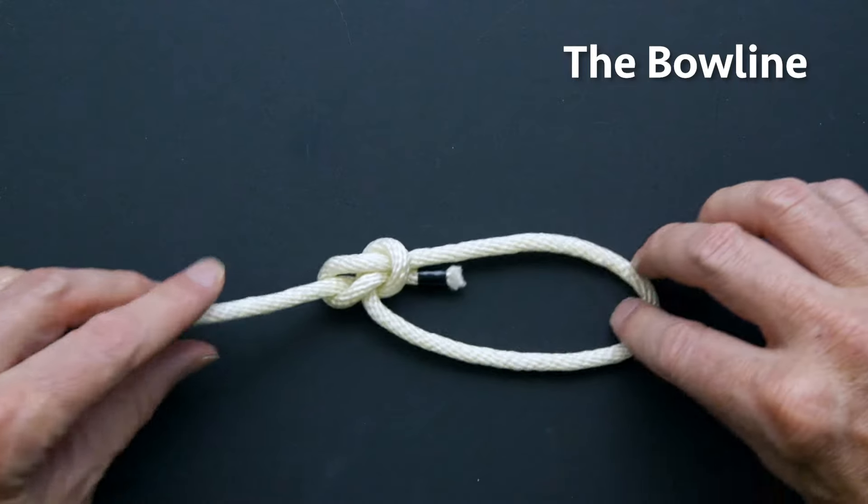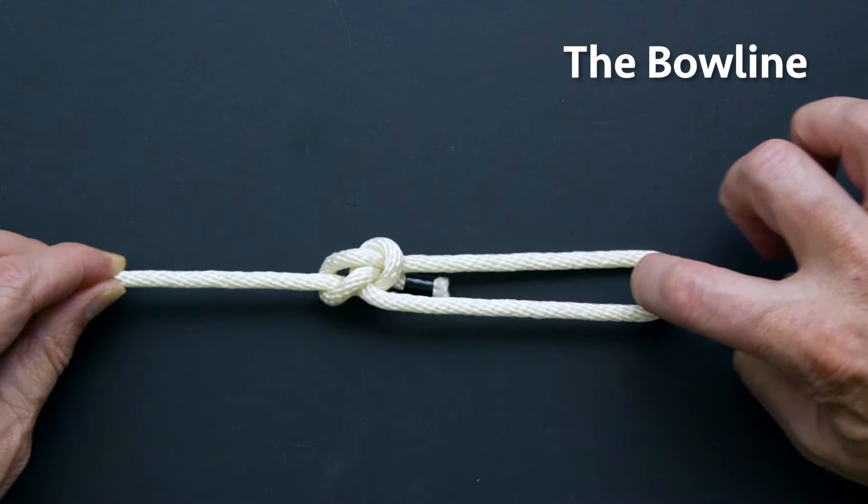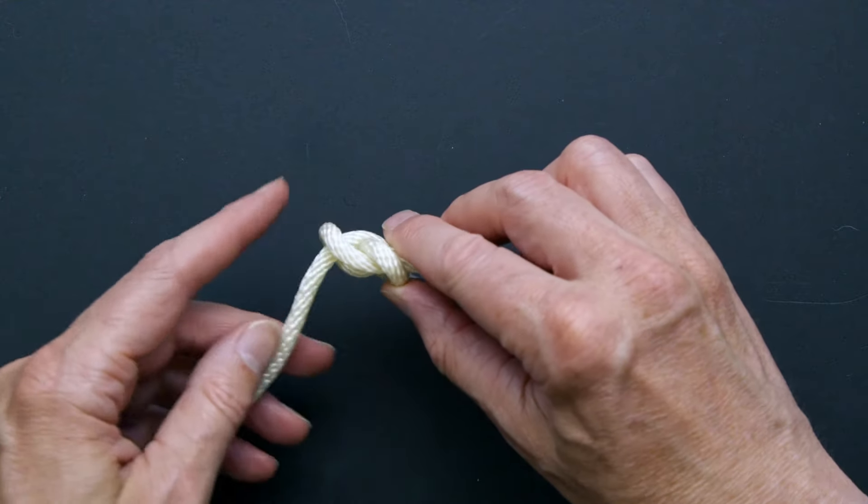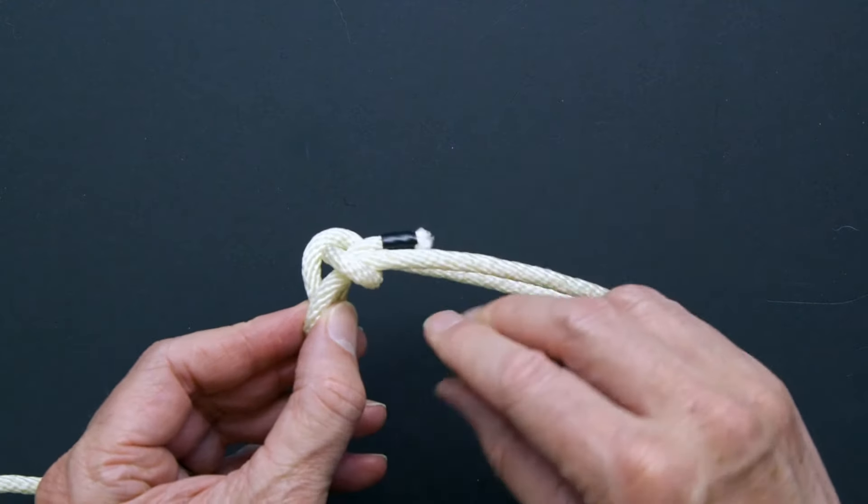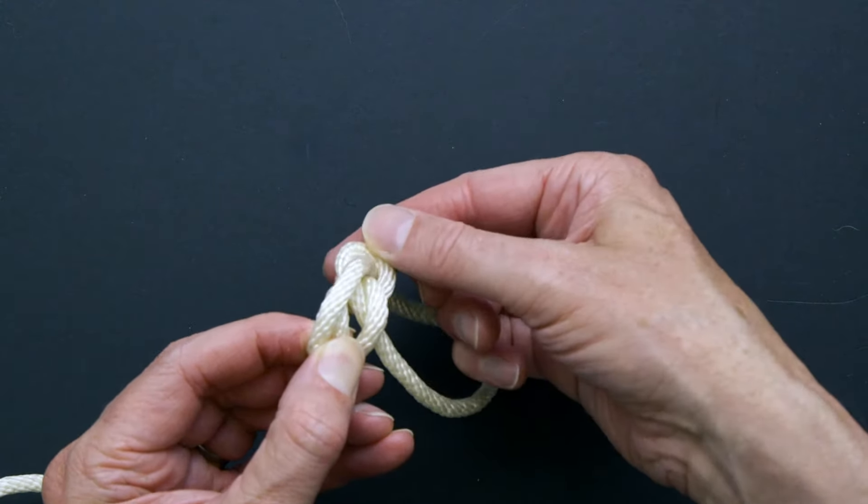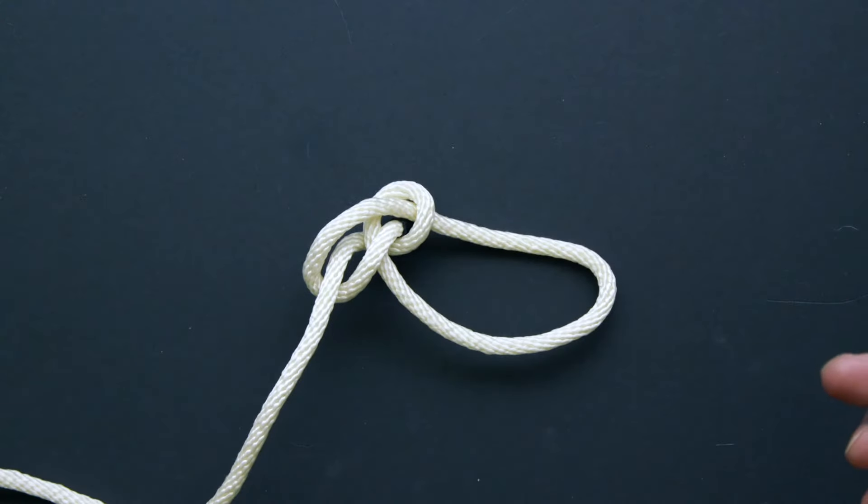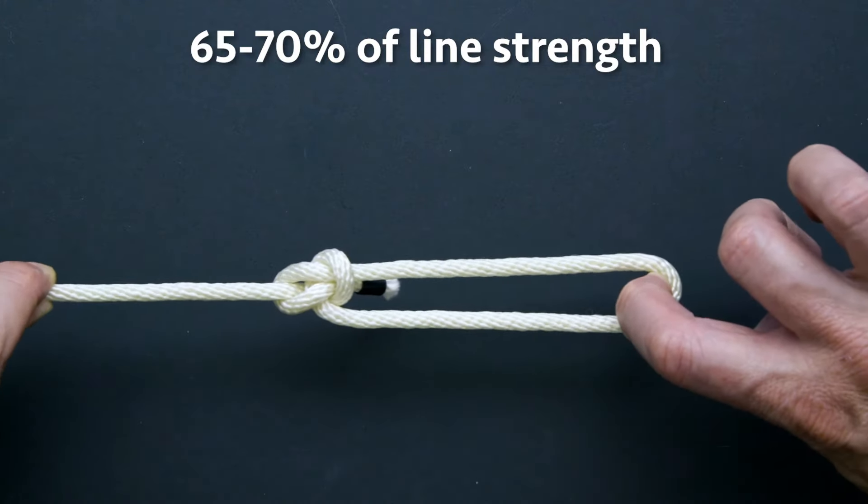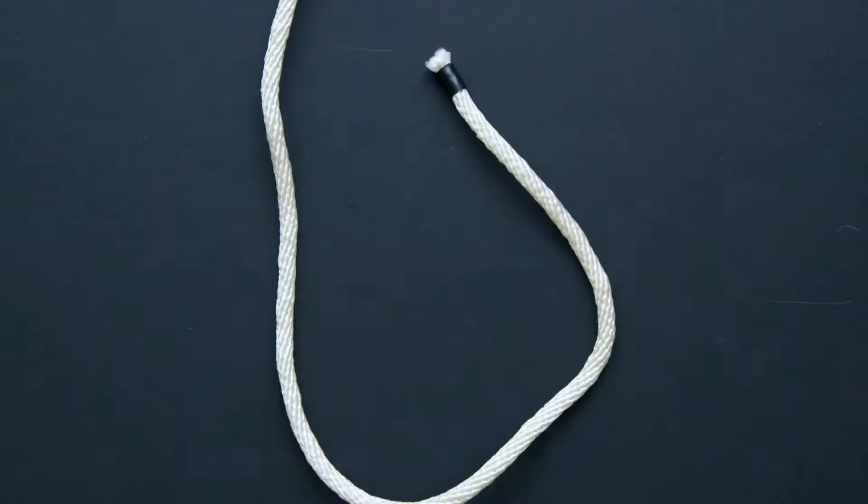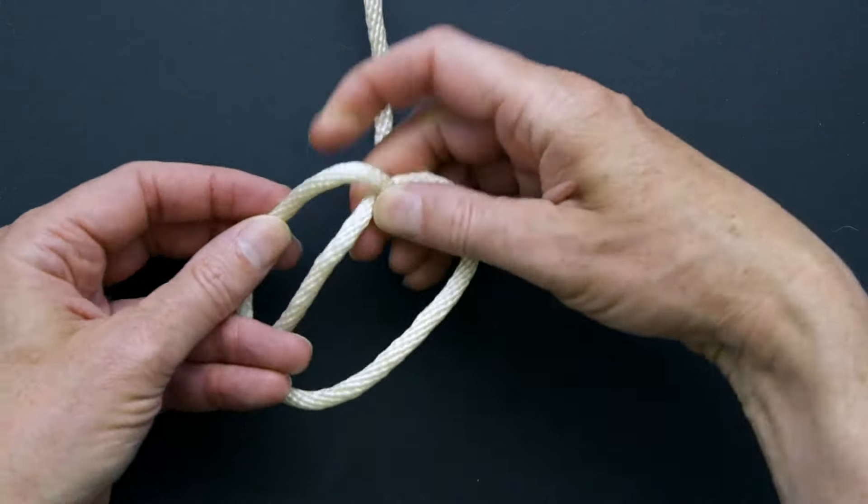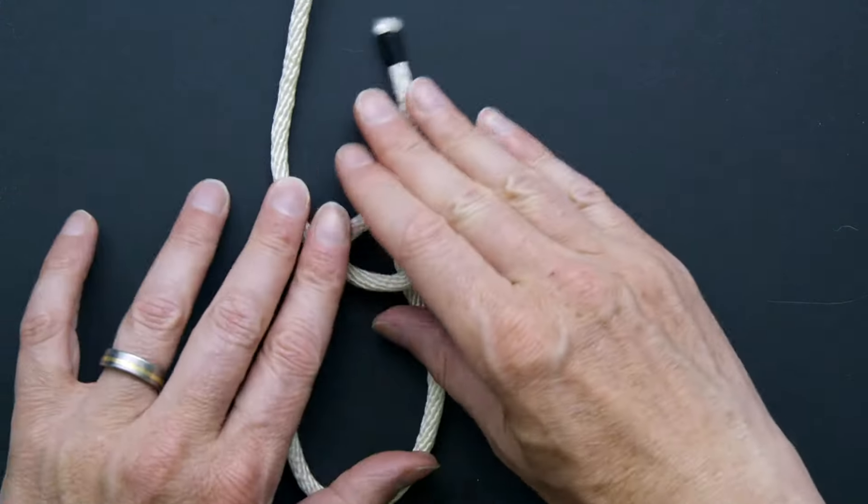The bowline. Why is it great? It's tight but can be easily untied by pulling on its nips. Also it minimally weakens the line. The bowline maintains 65 to 70 percent of a rope's strength. Here's a quick and easy way to tie a bowline that helps you get the loop correct.